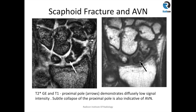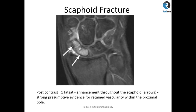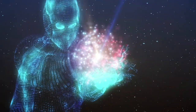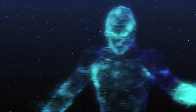On this post-contrast T1 fat-sat sequence, you can see that both the distal and proximal poles of the scaphoid are enhancing. There is probably some bony bridging at the lateral side of the fracture, and some of the fracture line is still visible. On the basis of enhancement of the proximal pole of the scaphoid, the vascularity is likely to be retained and the proximal pole is viable.